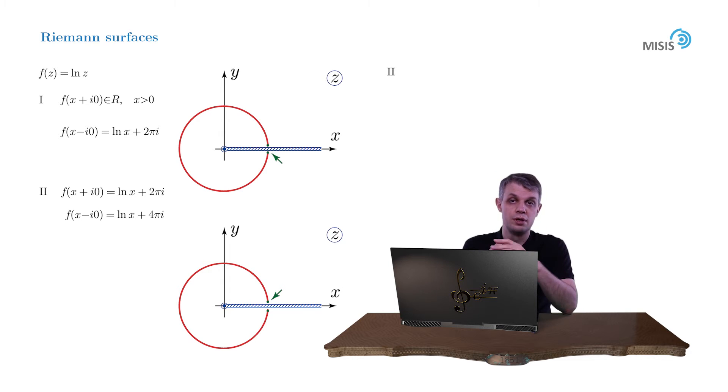Now we can do the same procedure once more. We take the third complex plane with the same branch cut from 0 to plus infinity and reserve it for a third regular branch. This one will be defined as log of x plus 4πi on the upper bank of this branch cut.